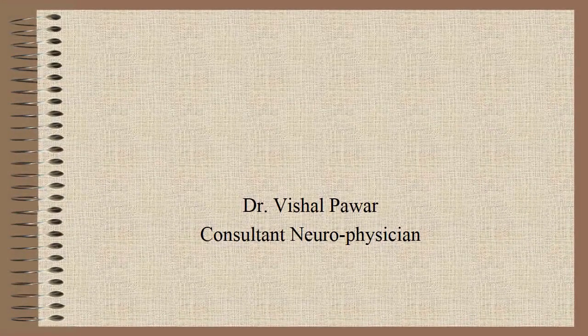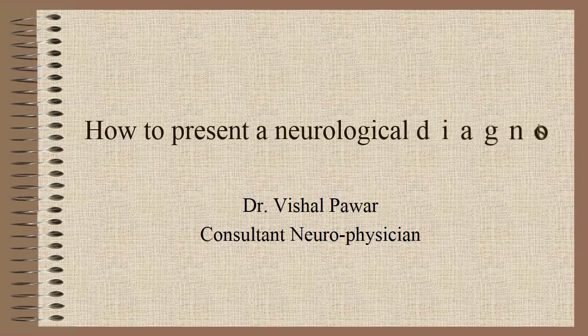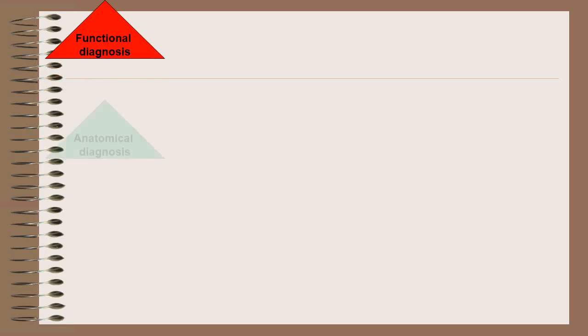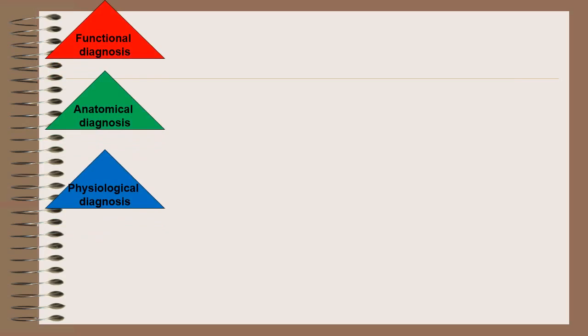In this video I am going to discuss how to present a neurological diagnosis. After detailed analysis of neurological symptoms and summarizing the case, the neurological diagnosis should be presented in four tiers: first, functional diagnosis; second, anatomical diagnosis; third, physiological diagnosis; and fourth, etiological diagnosis.